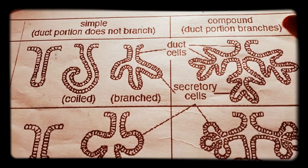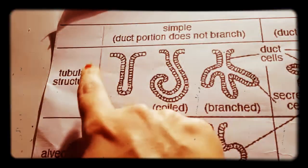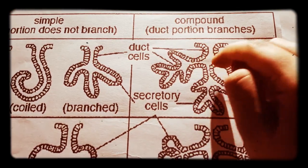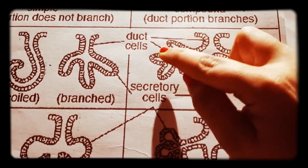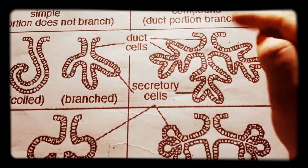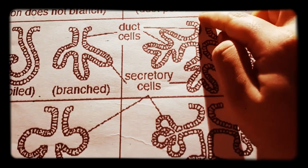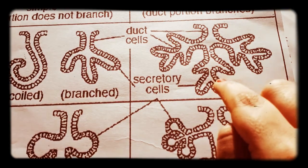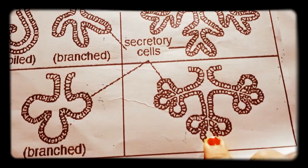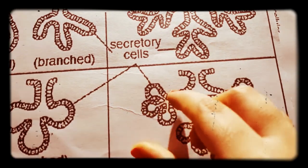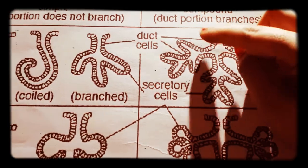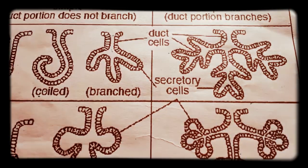In compound glands, the duct portion has branches — multiple ducts. If the secretory units are tubular in shape, we call it compound tubular. If the secretory units are alveolar in shape, we call it compound alveolar. The distinction is always based on the shape of the secretory unit — tubular form or alveolar form.